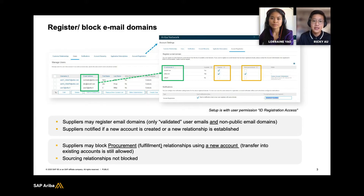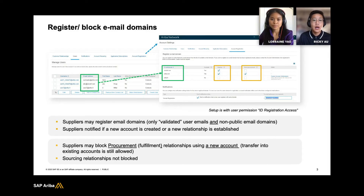Now there are a few prerequisites in regards to registering your email domain and I'll walk you through all of them. The first one is that you must be an administrator for your Ariba Network account. Next, you can only register an email domain that is in the list of domains of users in your account, as you can see in the screenshot to the right. Number three, only validated emails with active logins can be registered. Number four, the email domain must not have been registered before.